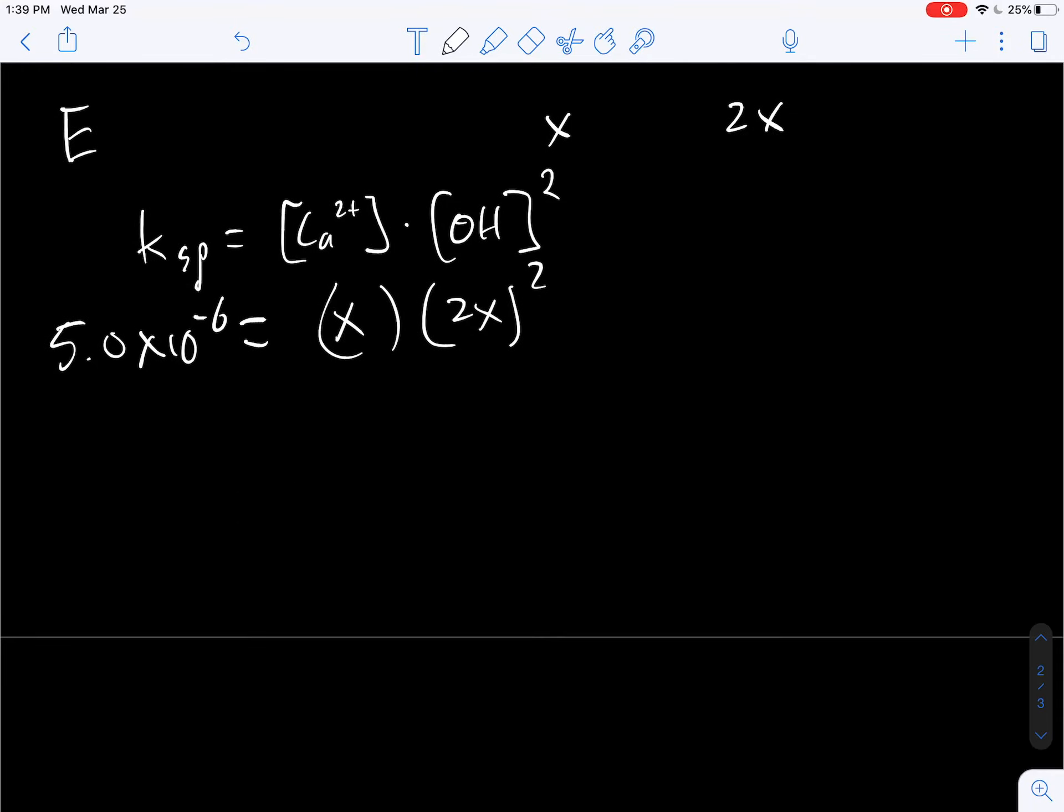Okay. Let's go ahead and collect our terms. This goes to x times 2 squared times x squared. So that's going to be 4x squared. So keeping going here, let's move this over here. Actually, we'll leave that here.